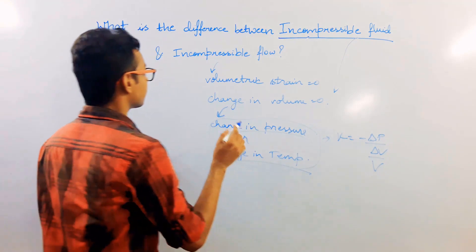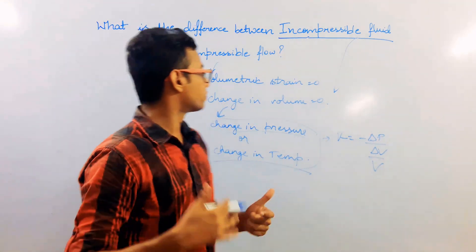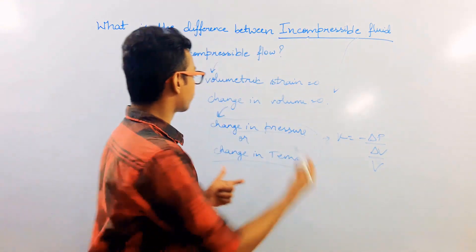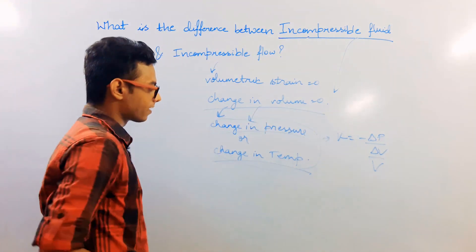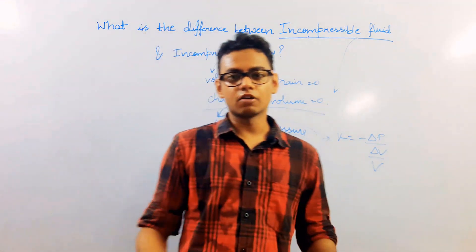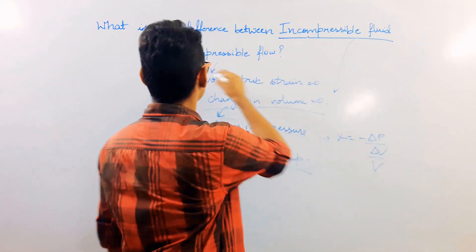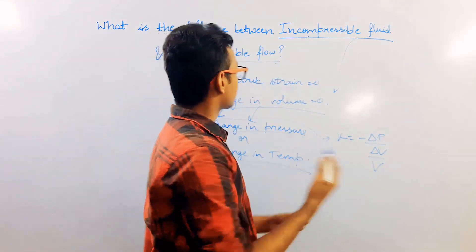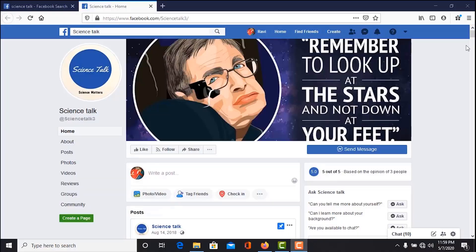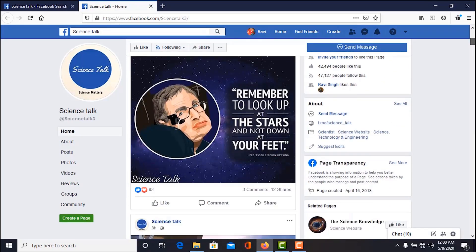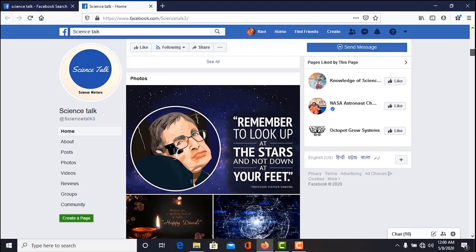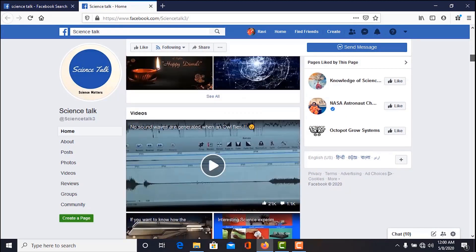So, that flow for which the volumetric strain is zero — whether brought about by change in pressure, change in temperature, or any other factor — is called incompressible flow. That is all about this video. For more exciting content about science in the form of news, videos, or articles, don't forget to like our page Science Talk on Facebook — the link is given below.